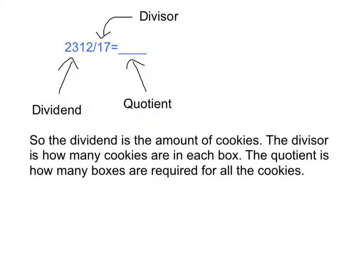So the dividend is the amount of cookies. The divisor is how many cookies are in each box. The quotient is how many boxes are required for all the cookies.